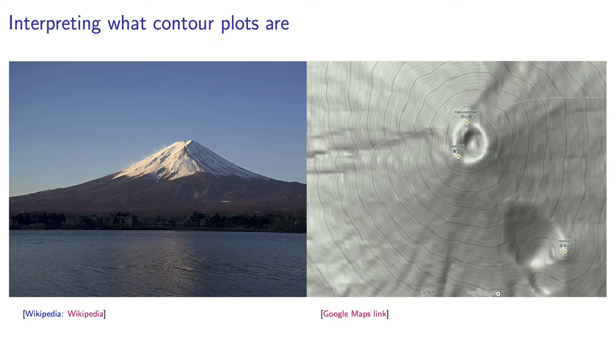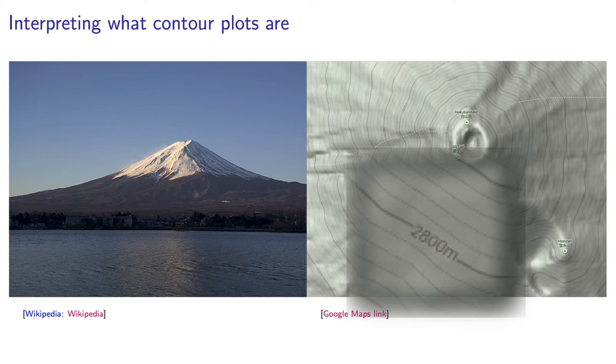Here is a photo of Mt. Fuji in Japan on the left, and a contour plot of the mountain is shown on the right. Notice that these small numbers here on the plot tell how high up the mountain we are.